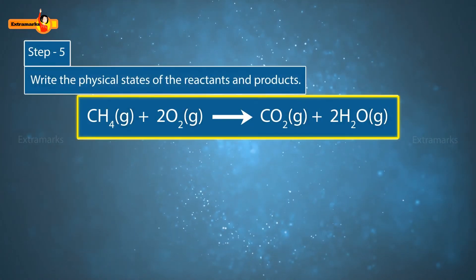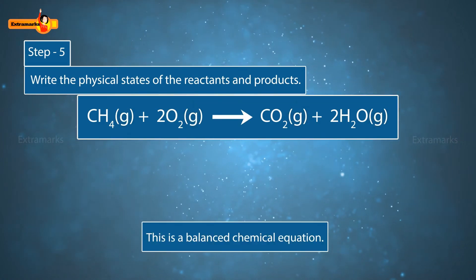Now, write the physical states of the reactants and products along with their chemical formulae. This is a balanced chemical equation.